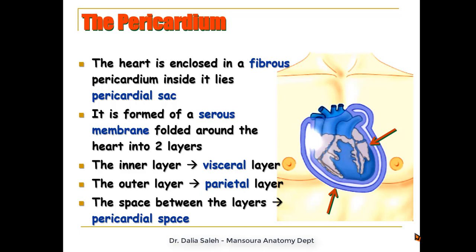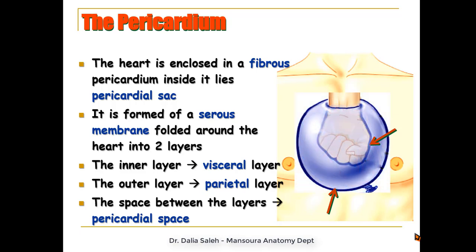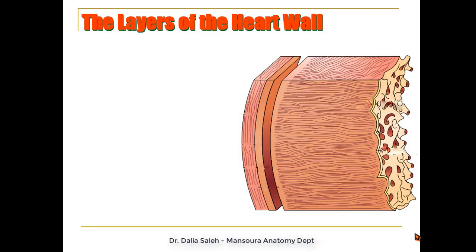To better understand this, imagine the heart as a closed fist pressing into a balloon from one side. The balloon skin folds upon your hand. The inner layer of the balloon skin close to your hand represents the visceral layer of the pericardium, the outer layer represents the parietal pericardium, the space between the two layers represents the pericardial space, and the balloon itself represents the pericardial sac.